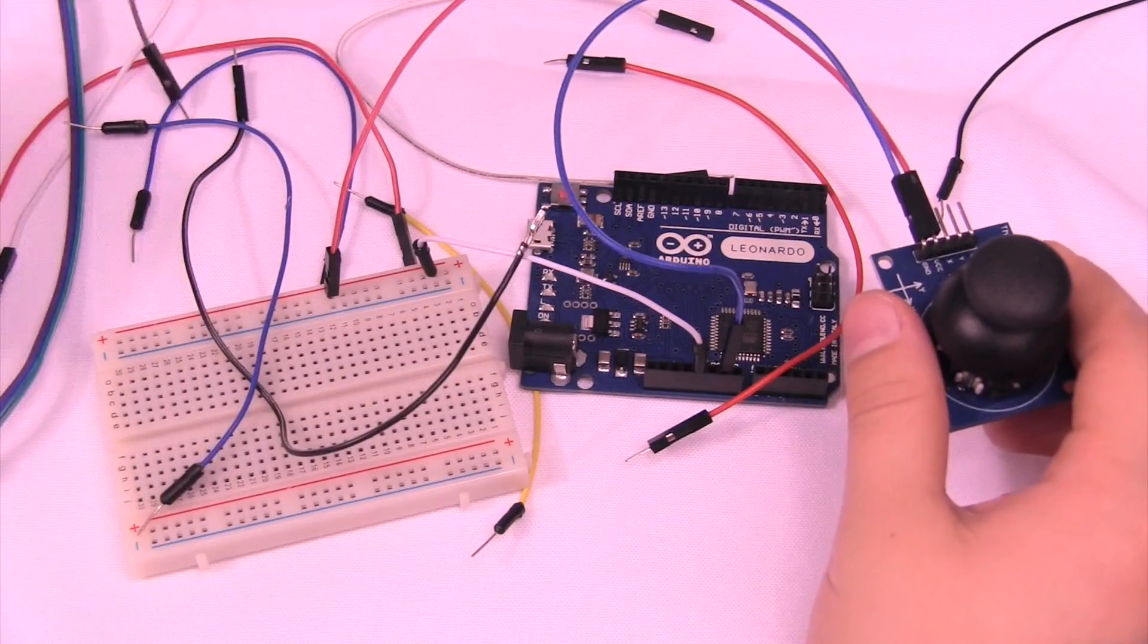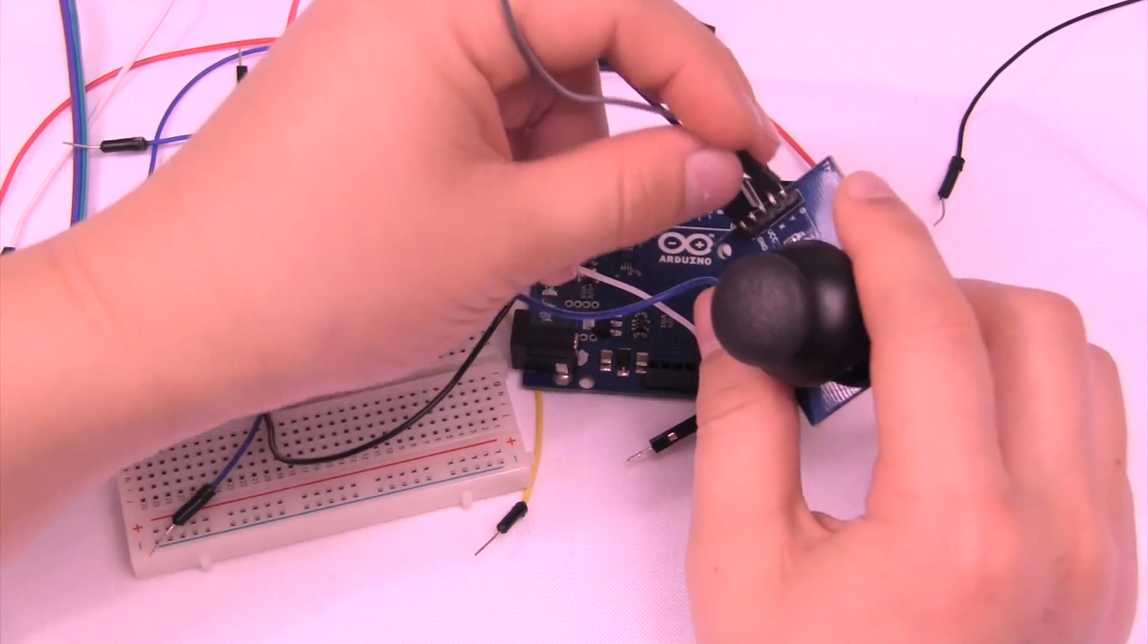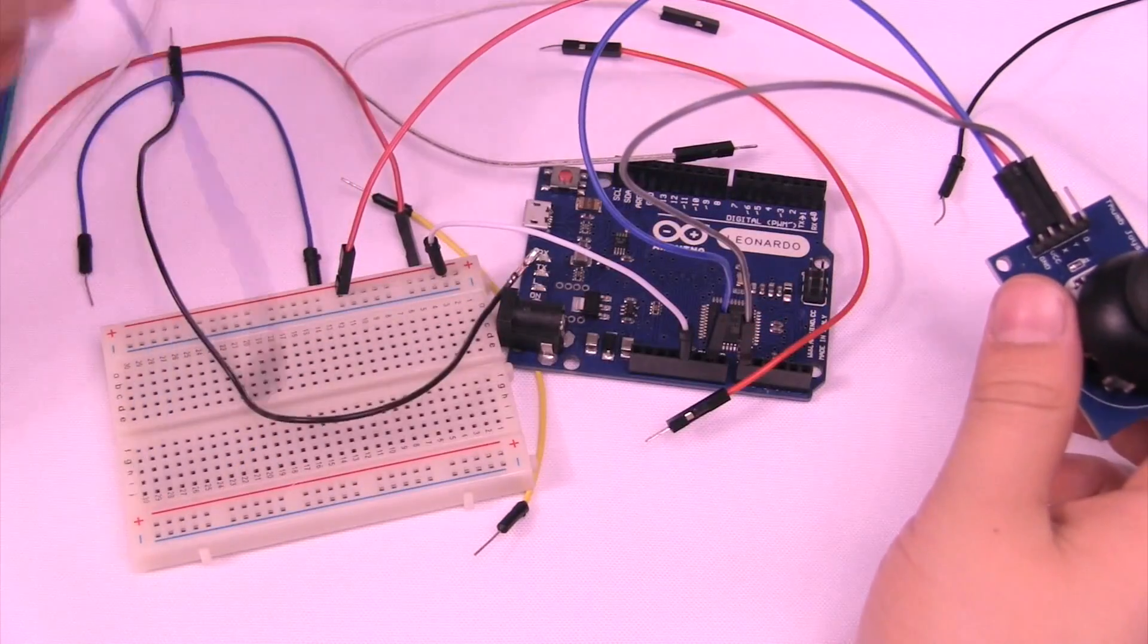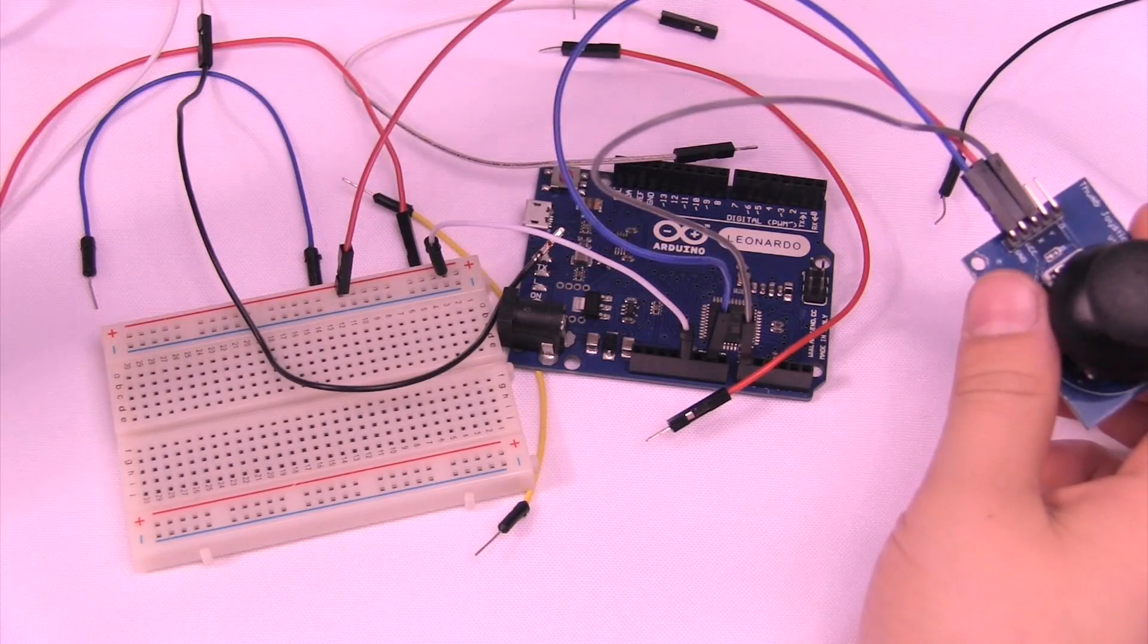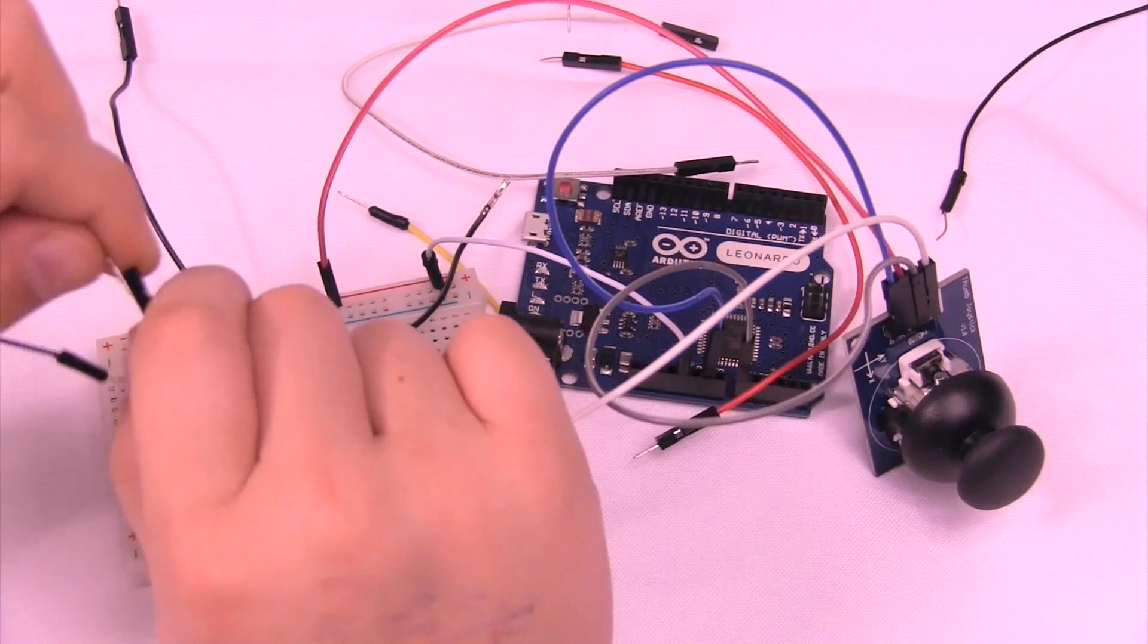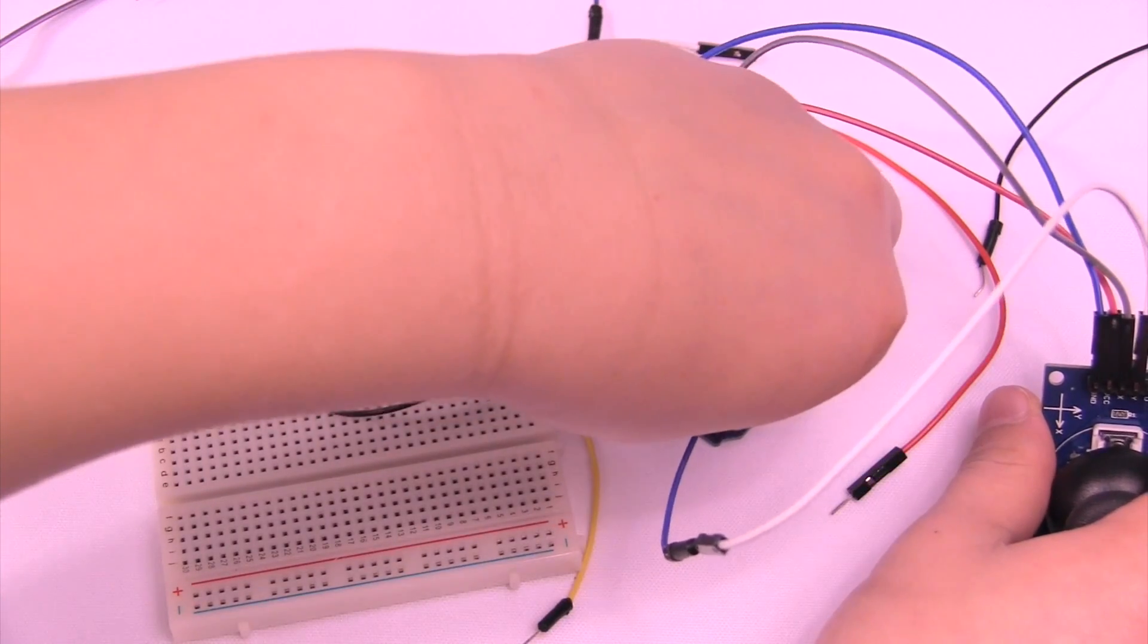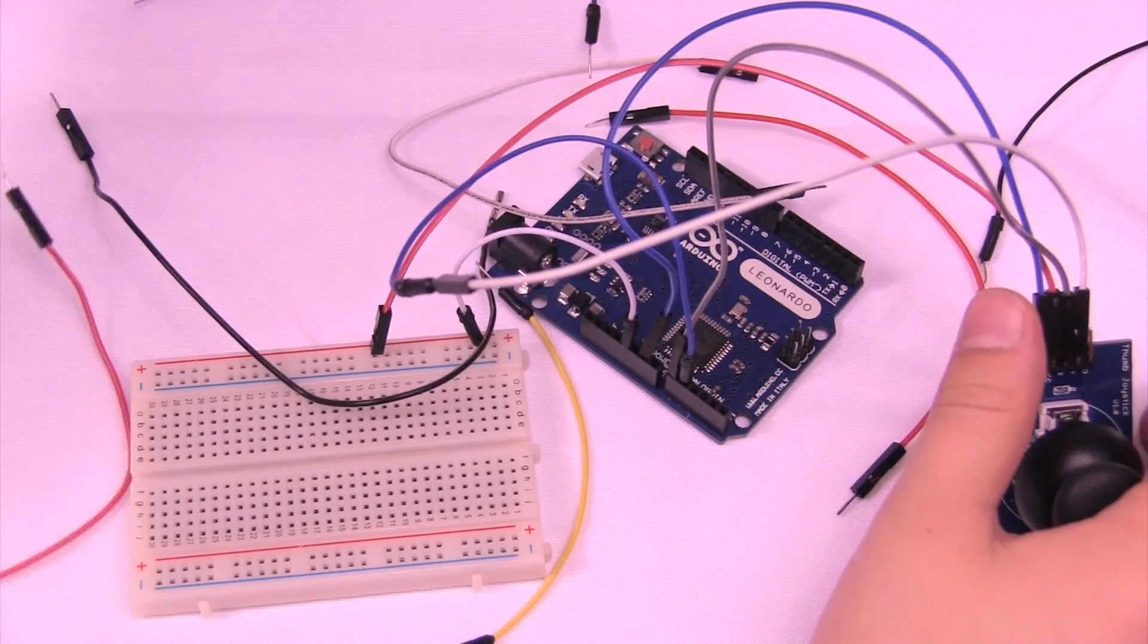Then you're gonna take another wire and connect the X to pin A0 on the Leonardo, and then pin Y to the A1. And we're gonna connect that D, which is a left click button, to pin 3, pin 3 digital.